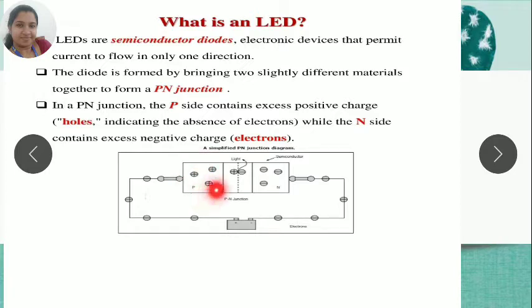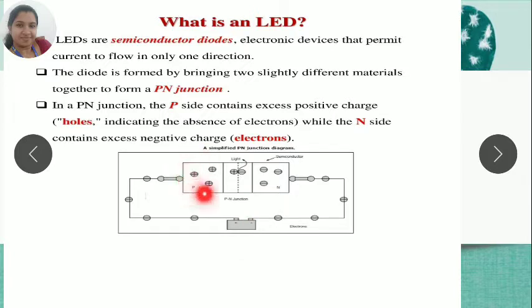In a PN junction, P is the majority carrier of holes and N is the majority carrier of electrons. The P side contains excess positive charges, that is holes, while the N-type material contains excess negative charges, that is electrons.